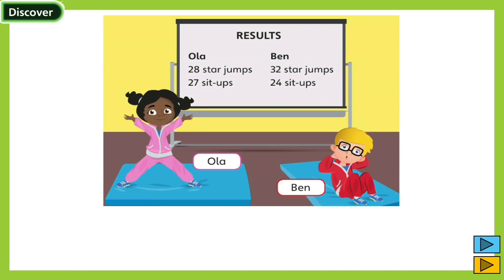Let's start. Look at this illustration. This is Ola and this is Ben. And this is their result board. We can see that Ola made 28 star jumps and 27 sit-ups, while Ben made 32 star jumps and 24 sit-ups. So here is our first question. Who has done more star jumps? What do you think this question is asking you to work out? This question is asking you to compare which number is bigger. So how many star jumps did Ola make? 28.